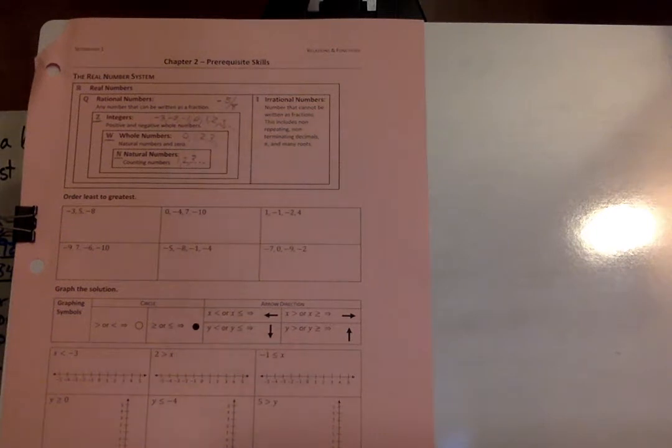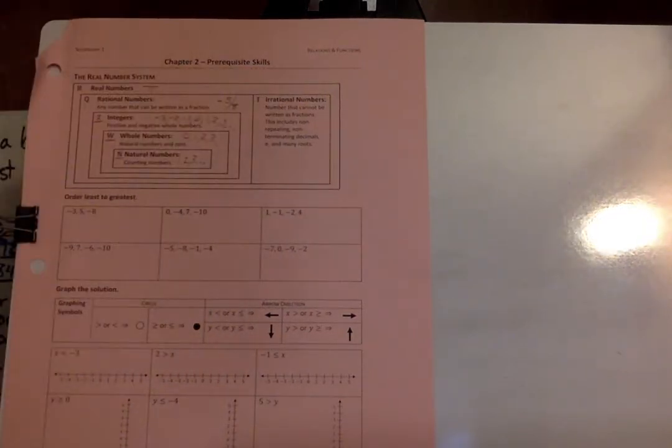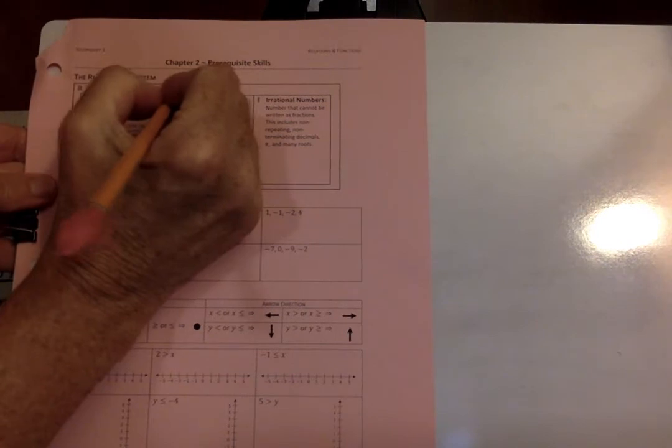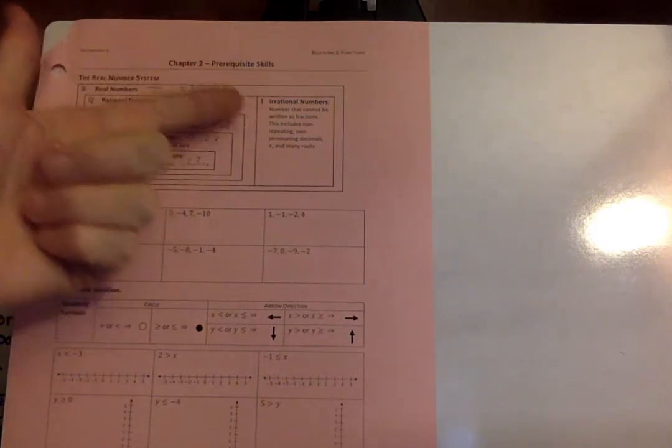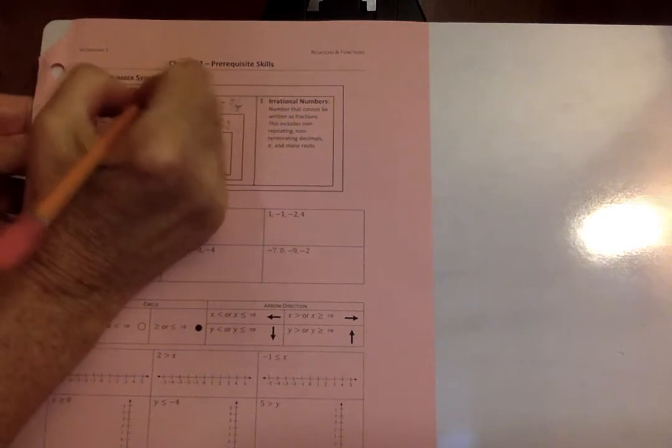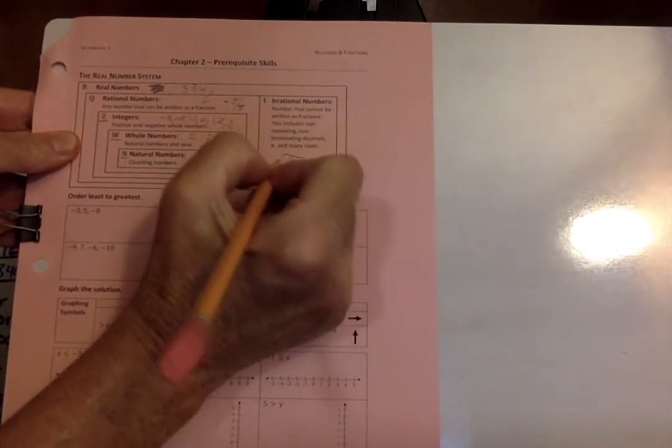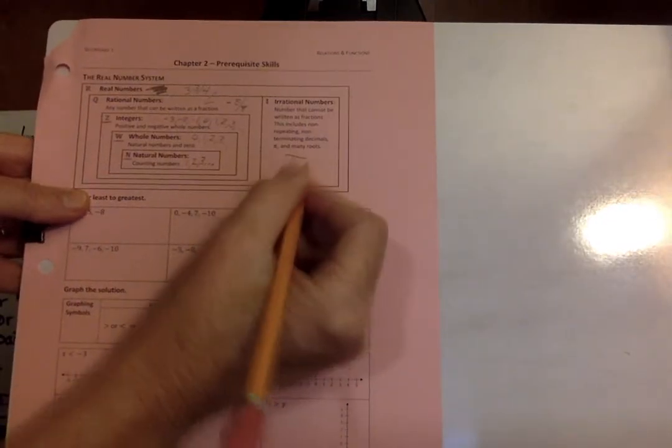And then the real number systems include like pi, and they include all the fractions, all the regular numbers as well. So real numbers could be numbers that don't repeat and don't end, like pi doesn't repeat and it doesn't end. And there's other ones you could even do like three and three-fourths. That is also included in the rational numbers because you can write it as a fraction. Irrational numbers are numbers that cannot be written as fractions. This includes non-repeating, non-terminating decimals. So I was wrong about pi. Pi is an irrational number. It doesn't repeat and it doesn't end. So the real numbers, this is just the whole real number system. These are irrational numbers. They don't repeat and they don't end, such as pi.